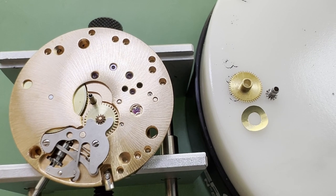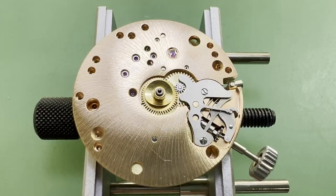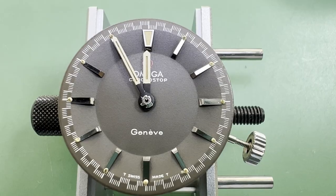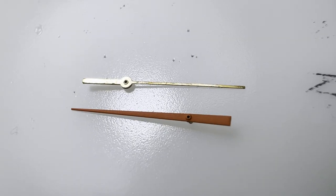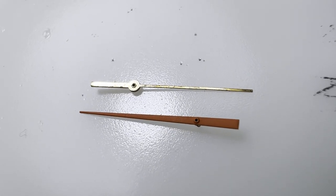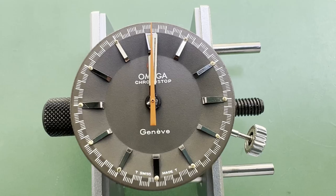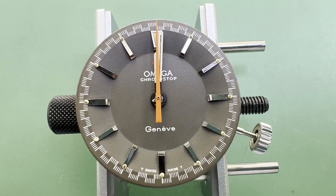We can finish off the movement by reattaching the cannon pinion and the hour wheel and spacer. Then the dial can go back on with the hour hand and minute hand. Here is the new old stock Omega Chronostop seconds hand. It looks so much better than the old one and is a genuine Omega part. It really does make the watch when it's back on.